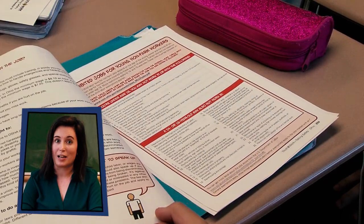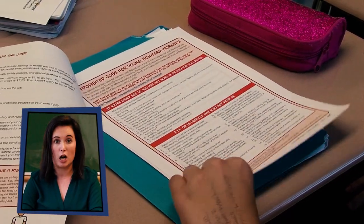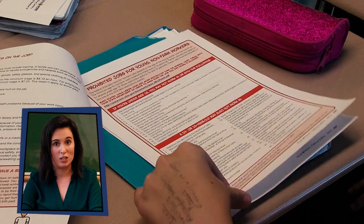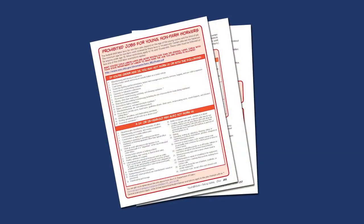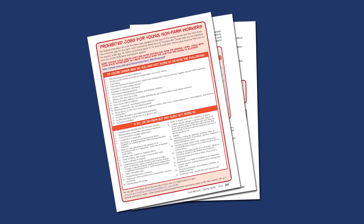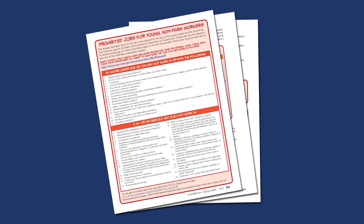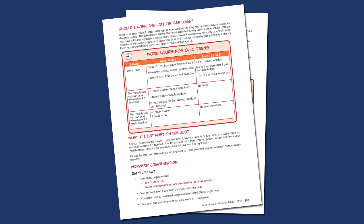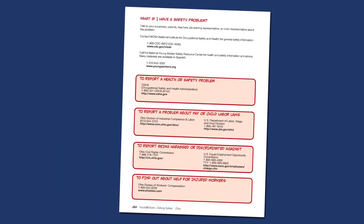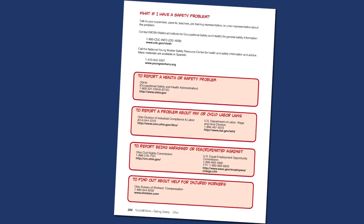The fact sheet provides state-specific information regarding minimum wage, Equal Employment Opportunity Commission, federally prohibited occupations, work permit requirements, work hours, and the agencies to contact to report different types of workplace problems, including OSHA, which is the agency they can file a complaint with about a safety and health problem anonymously and confidentially.